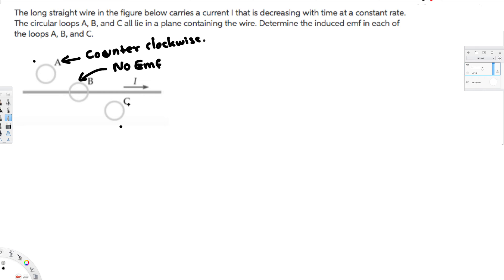Now let's look at loop C. Here the current is minimum. If current is minimum, magnetic field is also going to be minimum. If magnetic field is minimum, according to Lenz's law, the induced magnetic field is going to be maximum, and the induced EMF is also going to be maximum. If EMF is minimum it's counterclockwise, and if it's maximum it's going to be clockwise. So loop C is going to be clockwise.